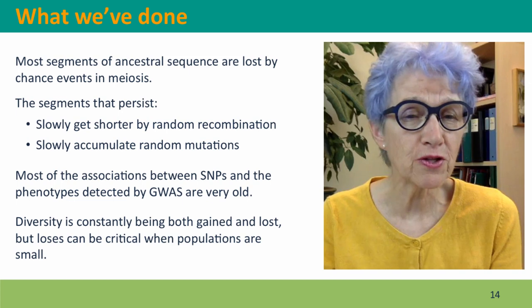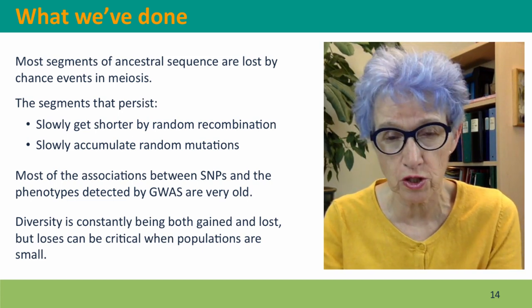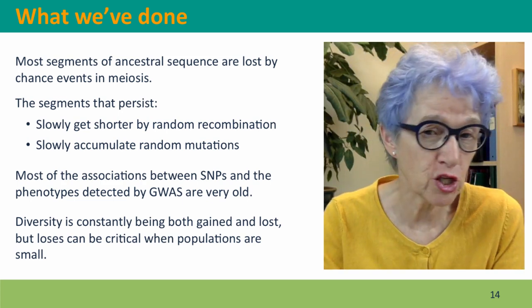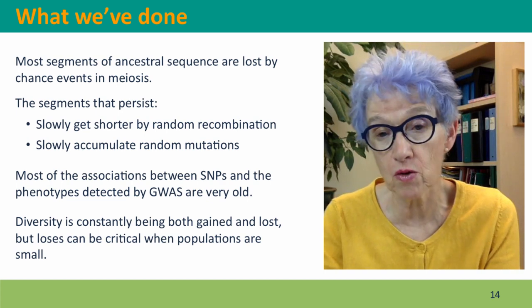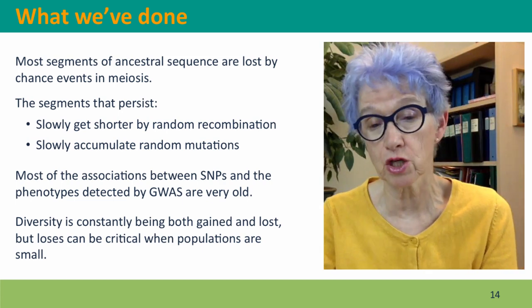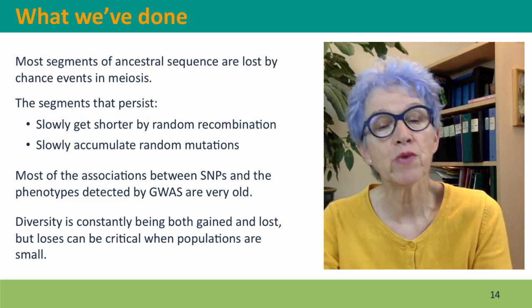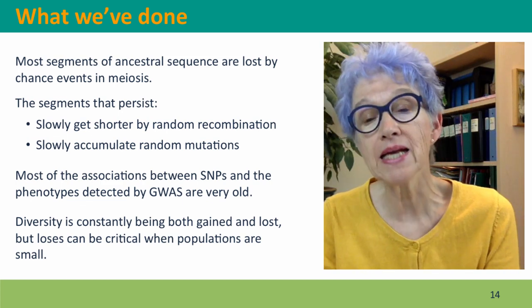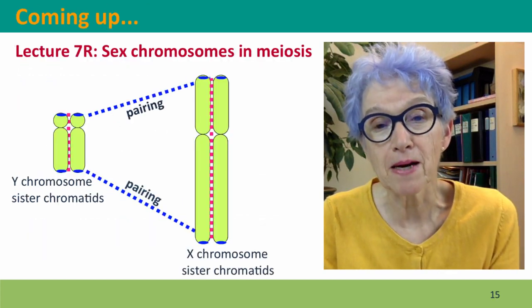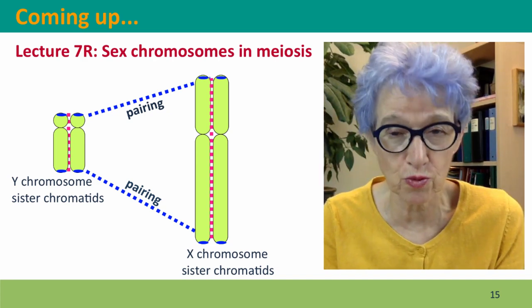In summary, most segments of DNA we inherit from our ancestors are lost by chance events in meiosis — most of our ancestors don't have the privilege of contributing to our genomes. The segments that persist slowly get shorter by random recombination and very slowly accumulate random mutations. Most associations between SNPs and phenotypes detected by genome-wide association studies are very old, reflecting events many generations ago. Genetic diversity is constantly lost and gained, but losses are especially important when populations become small. Coming up next, we'll go back to thinking about meiosis and discuss what the sex chromosomes do in meiosis.